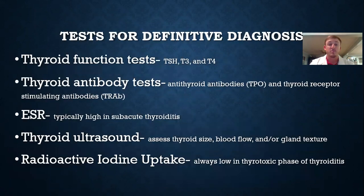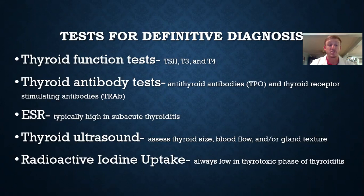For definitive diagnosis of thyroiditis, you may perform thyroid function tests — TSH, T3, T4 — as well as a thyroid antibody test given its autoimmune characteristics. ESR is used to assess thyroid and systemic inflammation. Thyroid ultrasound assesses thyroid size, blood flow, and texture and density. Radioactive iodine uptake is always low in the thyrotoxic phase of thyroiditis.